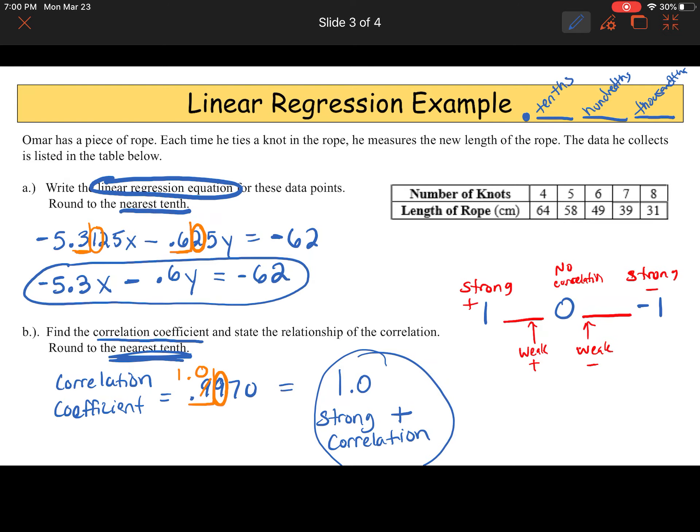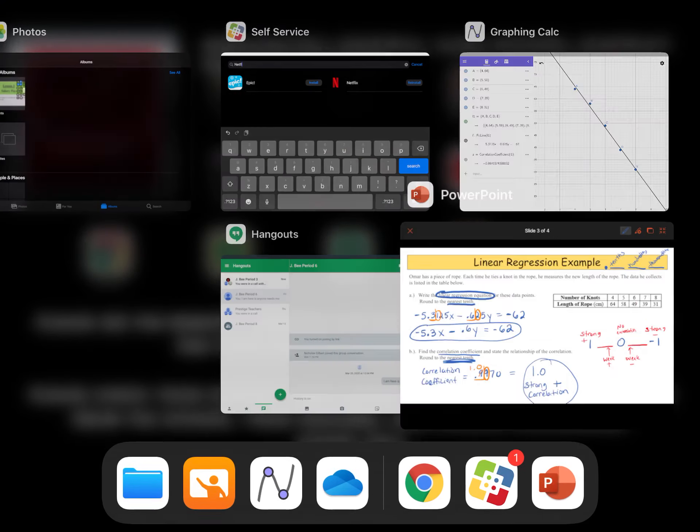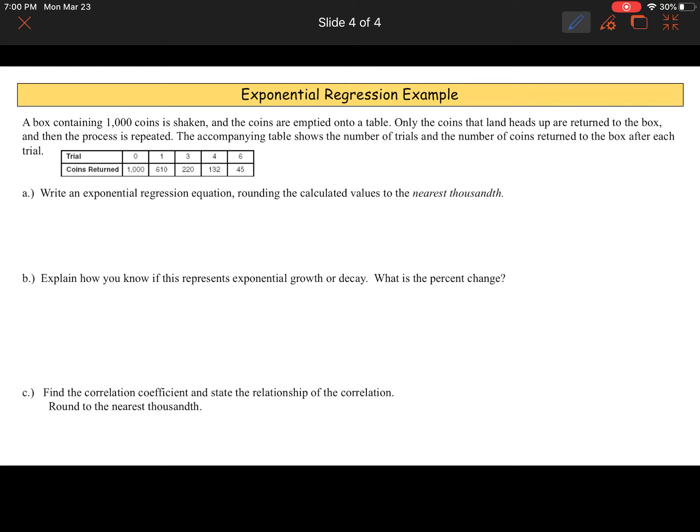So, this is for a linear regression example. Again, if we look at Geogebra, the line of this linear graph is straight. Last example. Exponential regression example. A box containing 1,000 tokens is shaken, and the coins are emptied onto the table. Only the coins that land heads up are returned to the box, and then the process is repeated. The accompanying table shows the number of trials and the number of coins returned to the box after each trial. So really, the words just tell you a whole bunch of information. This table is the information that we really care about. It says, write an exponential regression equation. As soon as you see that, you go right to Geogebra. Geogebra will do all the work for you.